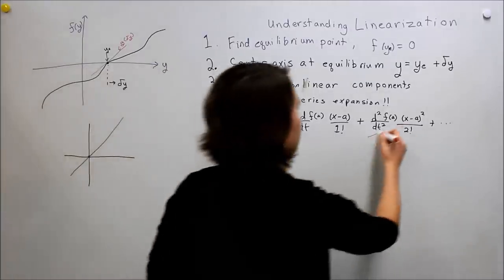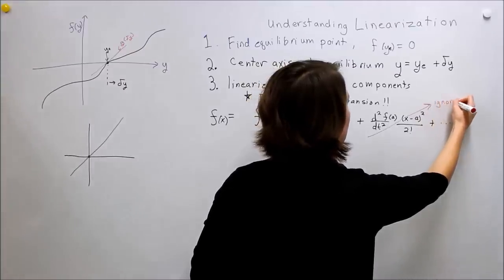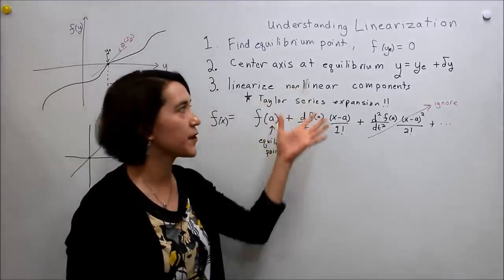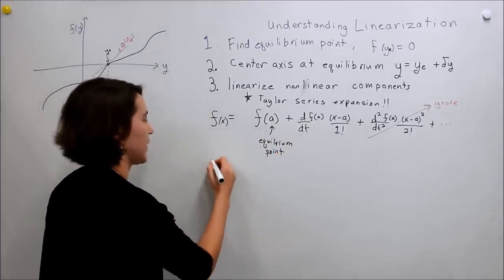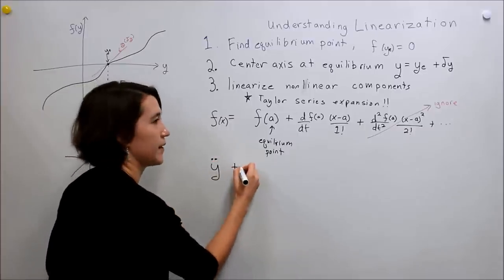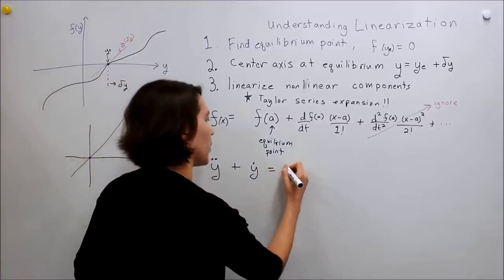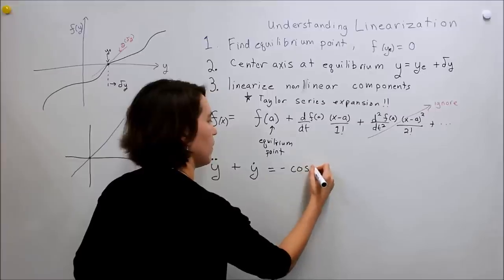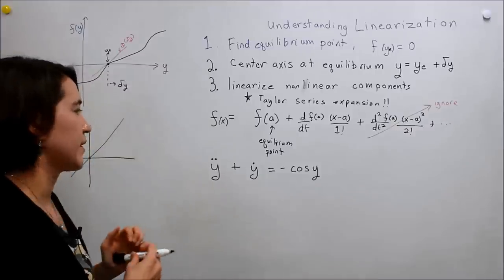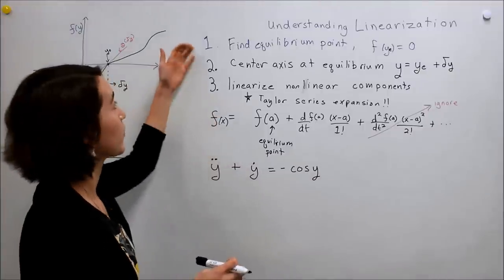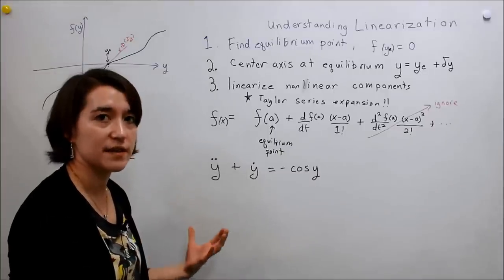So we ignore higher-order terms. Now let's take an example. Let's say we have y double dot plus y dot equals negative cosine of y. To do this, we first need to find the equilibrium point. When we do that, we assume that the dynamics of the system are zero — so y double dot and y dot are both zero.